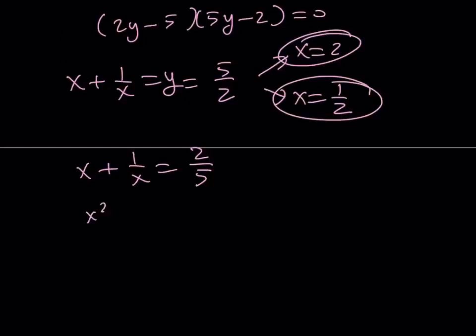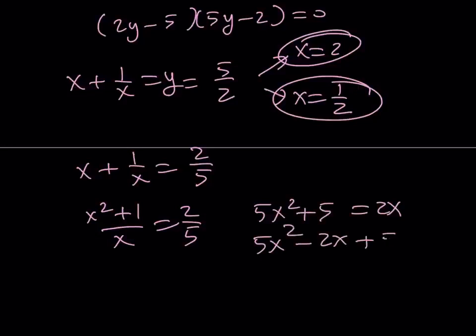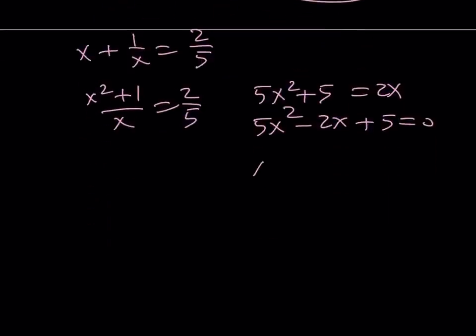Let's go ahead and solve this. x plus 1 over x equals 2 fifths. From here, we get 5x squared plus 5 is equal to 2x. And when you turn it into a quadratic equation, you're going to notice that this is going to give us non-real solutions. Negative b plus minus the square root of b squared minus 4ac. So, it's going to give us 100 and 10.